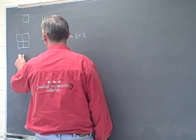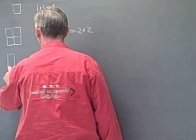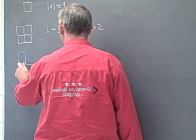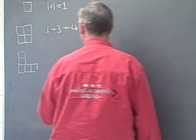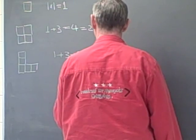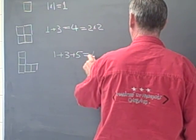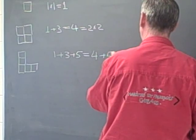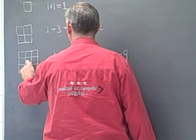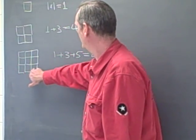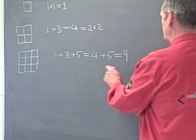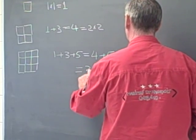The next thing I want to do is add five to that. I'm going to think about five as being two times two plus one. So one plus three plus five is the same thing as four plus five, which is the same thing as nine. This is my five on the outside plus the square four area, and so that's going to be the same thing as three times three.